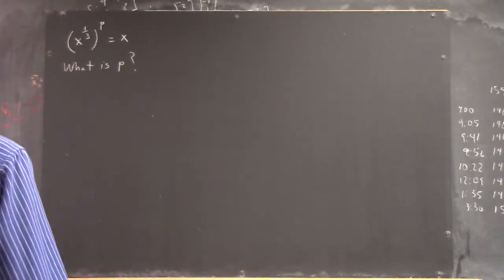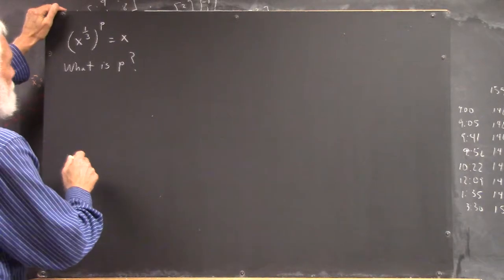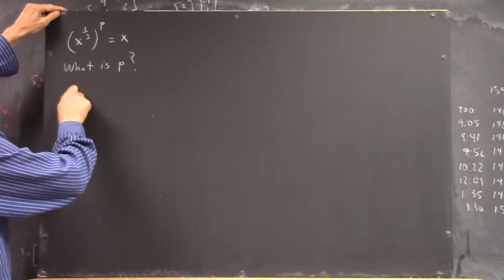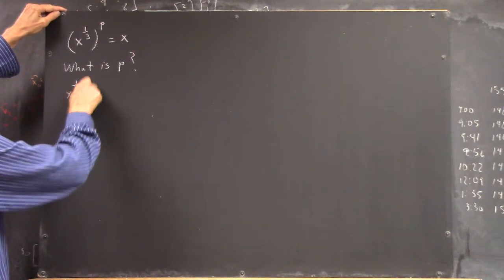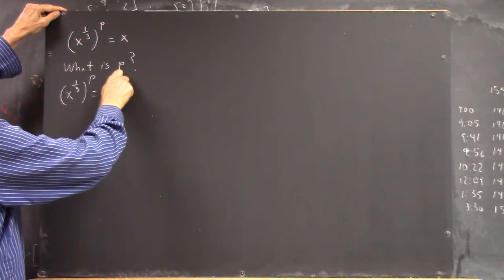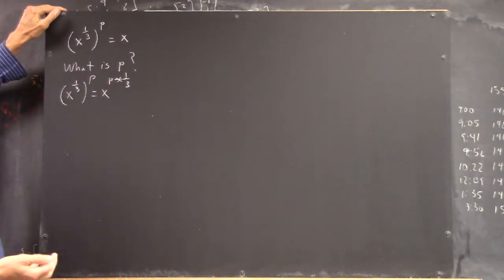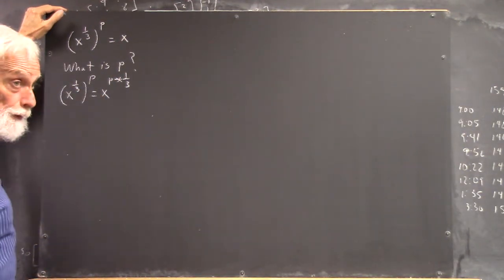Looks like we saw that one pretty quickly. Okay, well, I'll write it out. x to the 1/3 to the p is x to the p times 1/3, isn't it? Right.